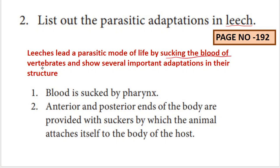The leech feeds by sucking the blood of vertebrates and shows several important adaptations in its structure. First, blood is sucked up using the pharynx. The pharynx is attached to the jaw in the leech. Also, the anterior and posterior ends of the body are provided with suckers — two suckers in total.